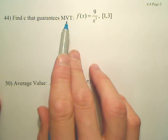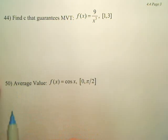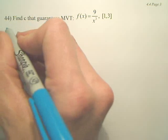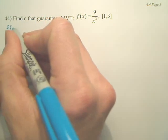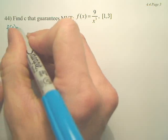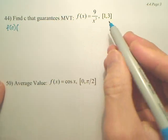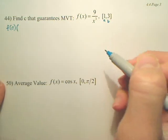To find the C value that guarantees the mean value theorem for this, the mean value theorem is this: F of C times B minus A. Well, this is A, this is B.